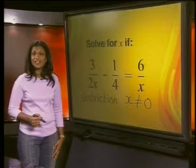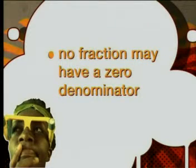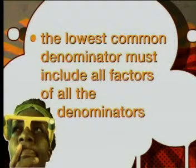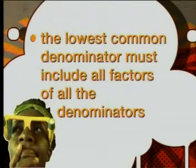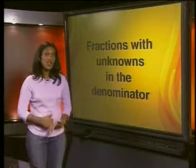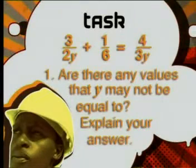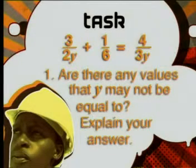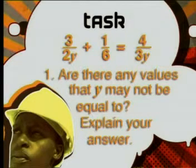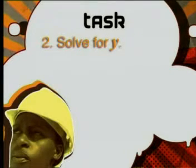Let's summarize what we learned in today's lesson: no fraction may have a 0 denominator, and the lowest common denominator must include all factors of all the denominators. Now, test your knowledge with this task: 3 divided by 2y plus 1 sixth is equal to 4 divided by 3y. Number 1, are there any values that y may not be equal to? Explain your answer. Number 2, solve for y.